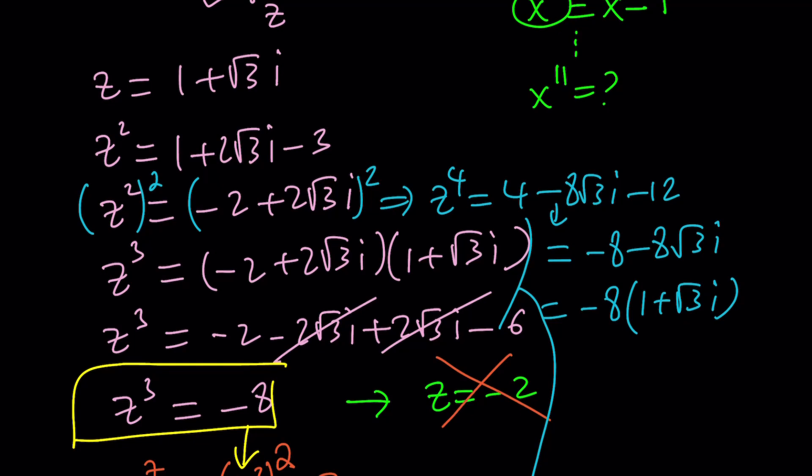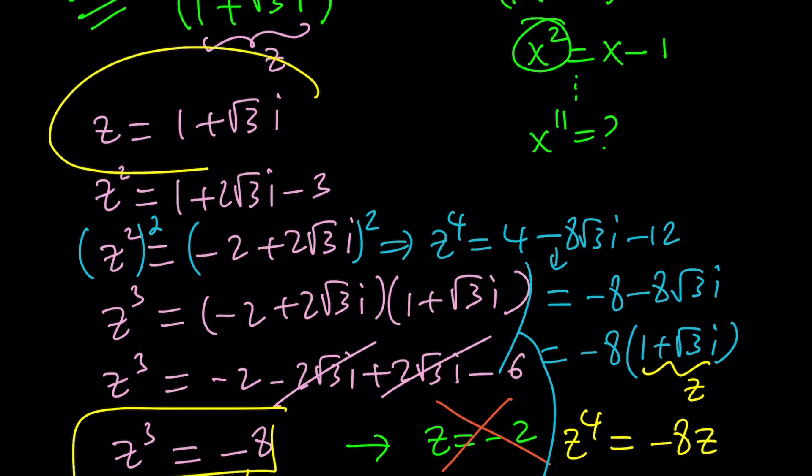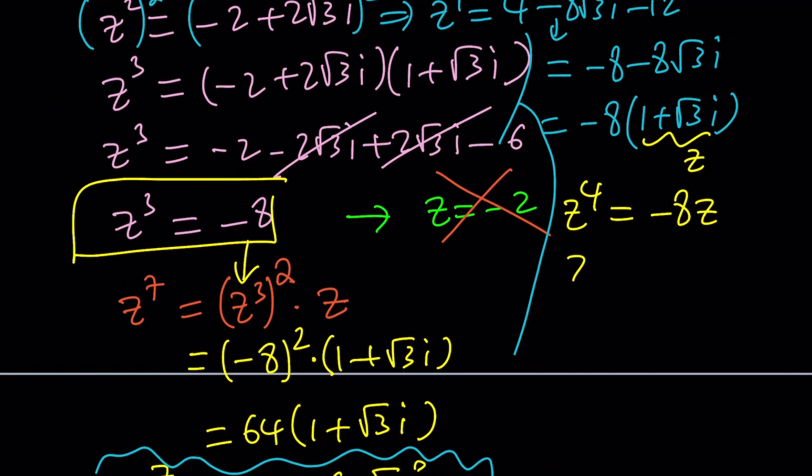And then you could basically take out a negative eight and write this as negative eight times one plus root three I. Wait a minute. Isn't that Z? Yes, it is. So from here, we would get an interesting identity. Z to the fourth power equals negative eight Z. And we do know that Z does not equal zero. Hopefully we do. Z does not equal zero.